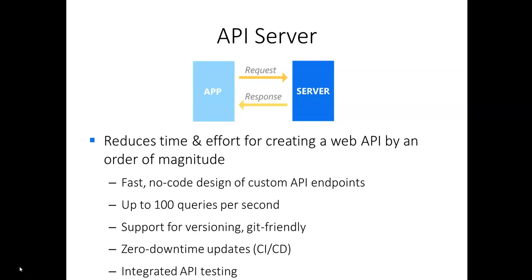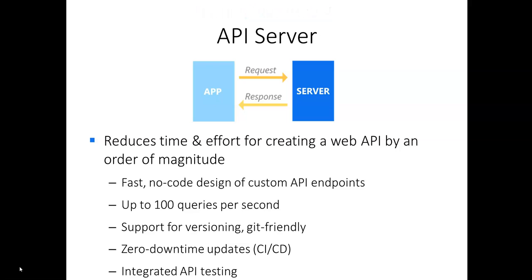Easymore Server is a data automation application that can be used for ETL automation, data preparation, and now it can also be used as a web server for serving web requests. The API server functionality allows fast creation of API endpoints and it allows processing queries with up to 100 queries per second.